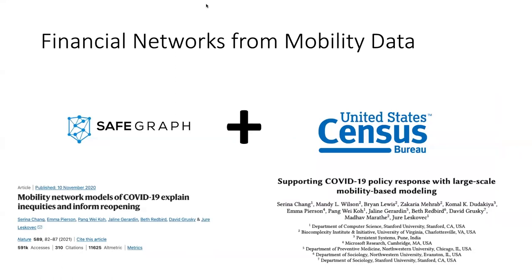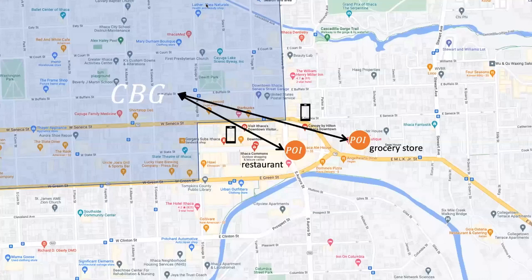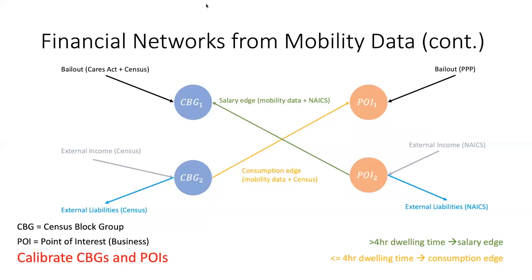We proceed by testing our algorithms on semi-artificial financial networks created from mobility data from SafeGraph and data from the US Census. Similar data have been used for COVID-19 modeling and designing large-scale reopening policies. The SafeGraph mobility data captures the movement of unique cell phone devices between census block groups and points of interest corresponding to businesses such as restaurants, fitness centers, and grocery stores. We focus on points of interest and census block groups around the city of Ithaca, New York. The data records dwelling times of mobile devices for each point of interest. We estimate the number of households in a census block group that interact with points of interest, and estimate the percentage of individuals employed at a specific business — defined as having at least four hours of dwelling time. We then create a salary edge from the point of interest to the census block group, with the amount determined by the average salary for that business type according to the NAICS classification.